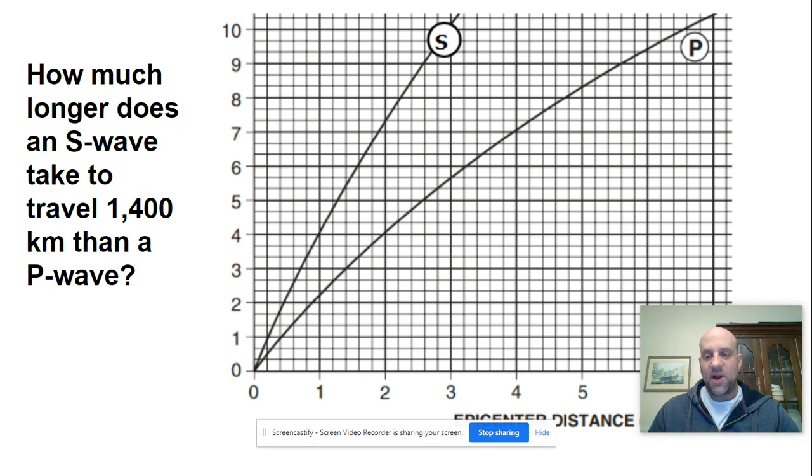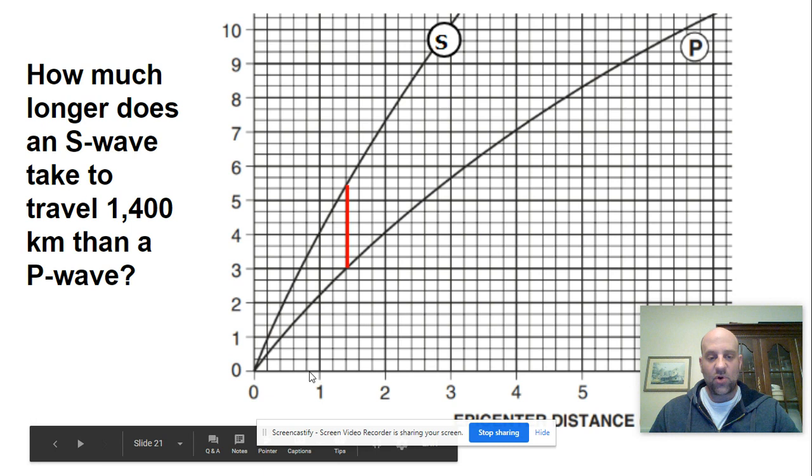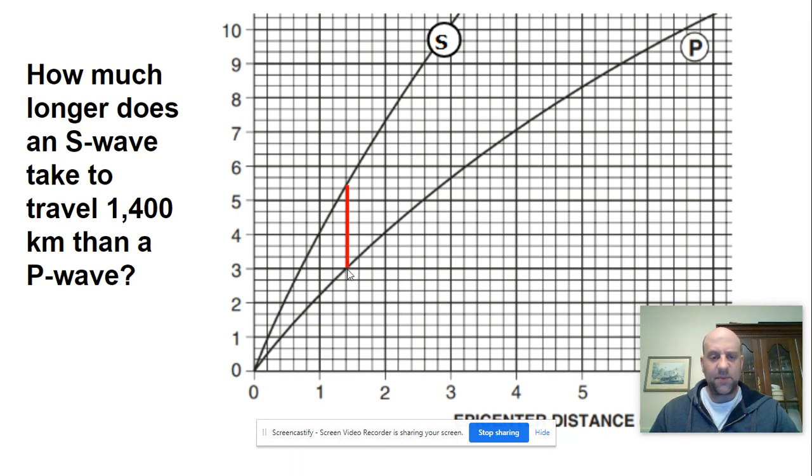Now one of the other problems we might be interested in is how much longer does it take an S-wave to travel a distance compared to a P-wave. So in this example, we're going to look at 1400 kilometers and see how much longer it would take an S-wave to travel that distance. First we need to locate where 1400 kilometers would be on our chart. We indicate that along the line in red. The line in red represents the time difference between when a P-wave would arrive and when an S-wave would arrive at a seismic station.